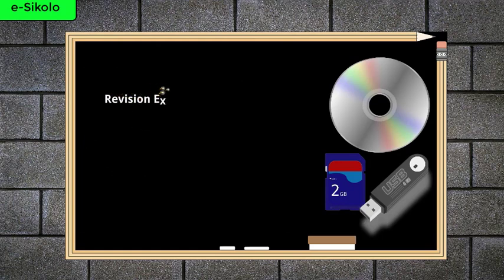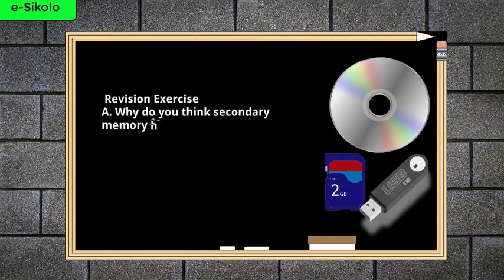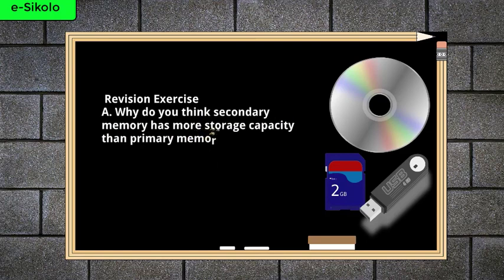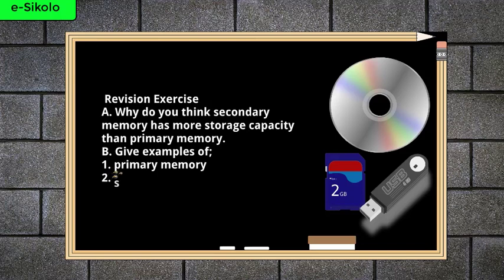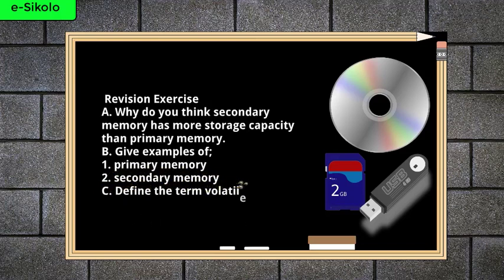Revision exercise. A: Why do you think secondary memory has more storage capacity than primary memory? B: Give examples of (1) primary memory and (2) secondary memory. C: Define the term volatile.